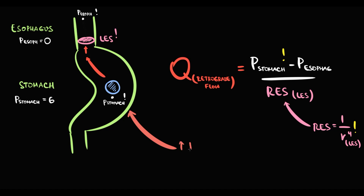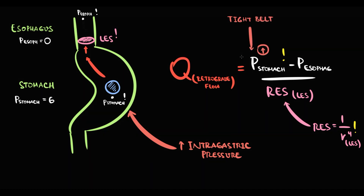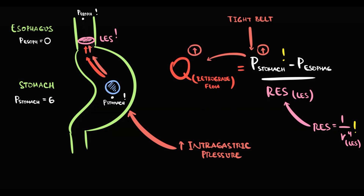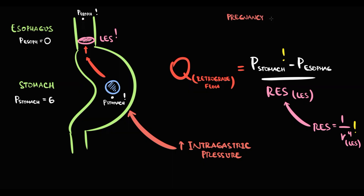The next group of factors causes increasing intragastric pressure. For example, a very tight belt increases abdominal pressure, and because abdominal pressure increases, intragastric pressure also increases. Increasing intragastric pressure causes increasing retrograde flow. In this case, intragastric pressure overcomes the resistance created by the lower esophageal sphincter, permitting intragastric content to pass through into the esophagus — the presence of stomach content inside the esophagus we call GERD.